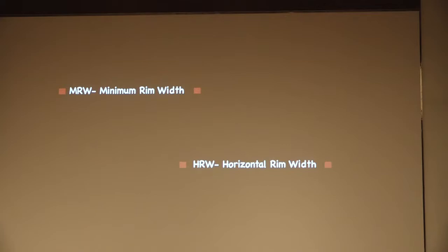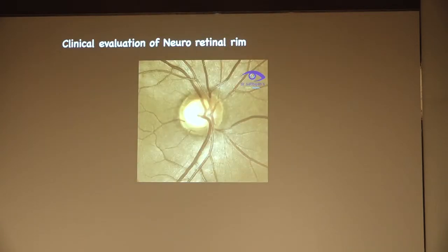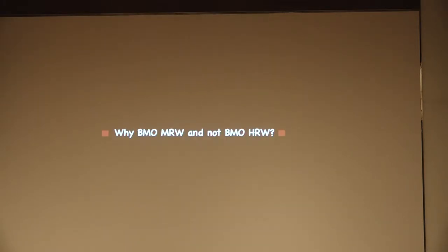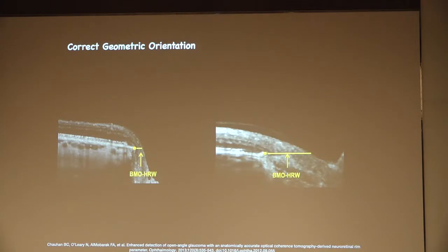The next terms we need to know are minimum rim width and horizontal rim width. In clinical evaluation, we see the scleral lip and the cup margin. The horizontal distance between the disc margin and the cup margin is the BMO horizontal rim width. We say that the BMO MRW is better than the BMO HRW — let's see why.